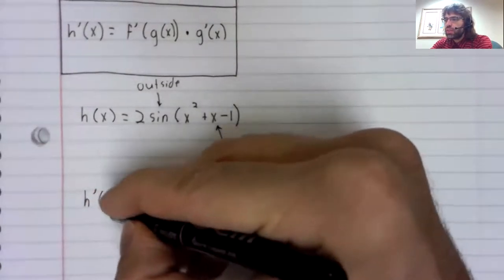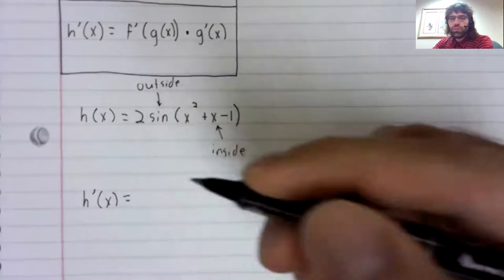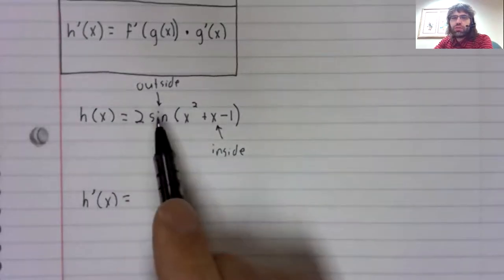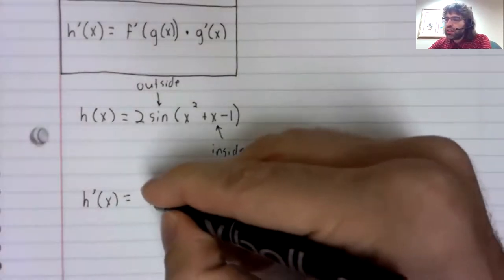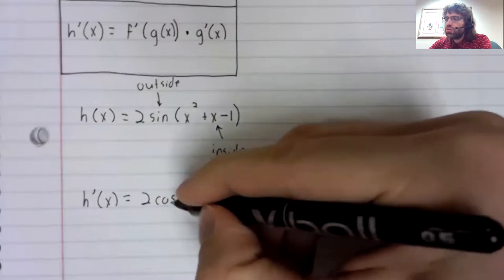The sine is the outside function. And what does the chain rule say to do as far as derivatives go? Well, we should take the derivative of the outside function. The derivative of two times the sine is two times the cosine.